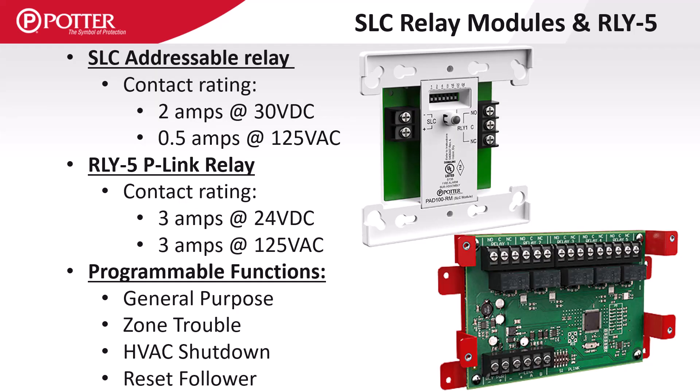Potter addressable relays have several available functions. Those functions include General Purpose, where the relay changes state on alarm; Zone Trouble, where the relay changes when a trouble condition exists within the zone; HVAC Shutdown, which is used in conjunction with the input type HVAC Restart to meet New York City requirements that HVAC units be restarted manually; and Reset Follower, where the relay only changes state during the panel's reset cycle.